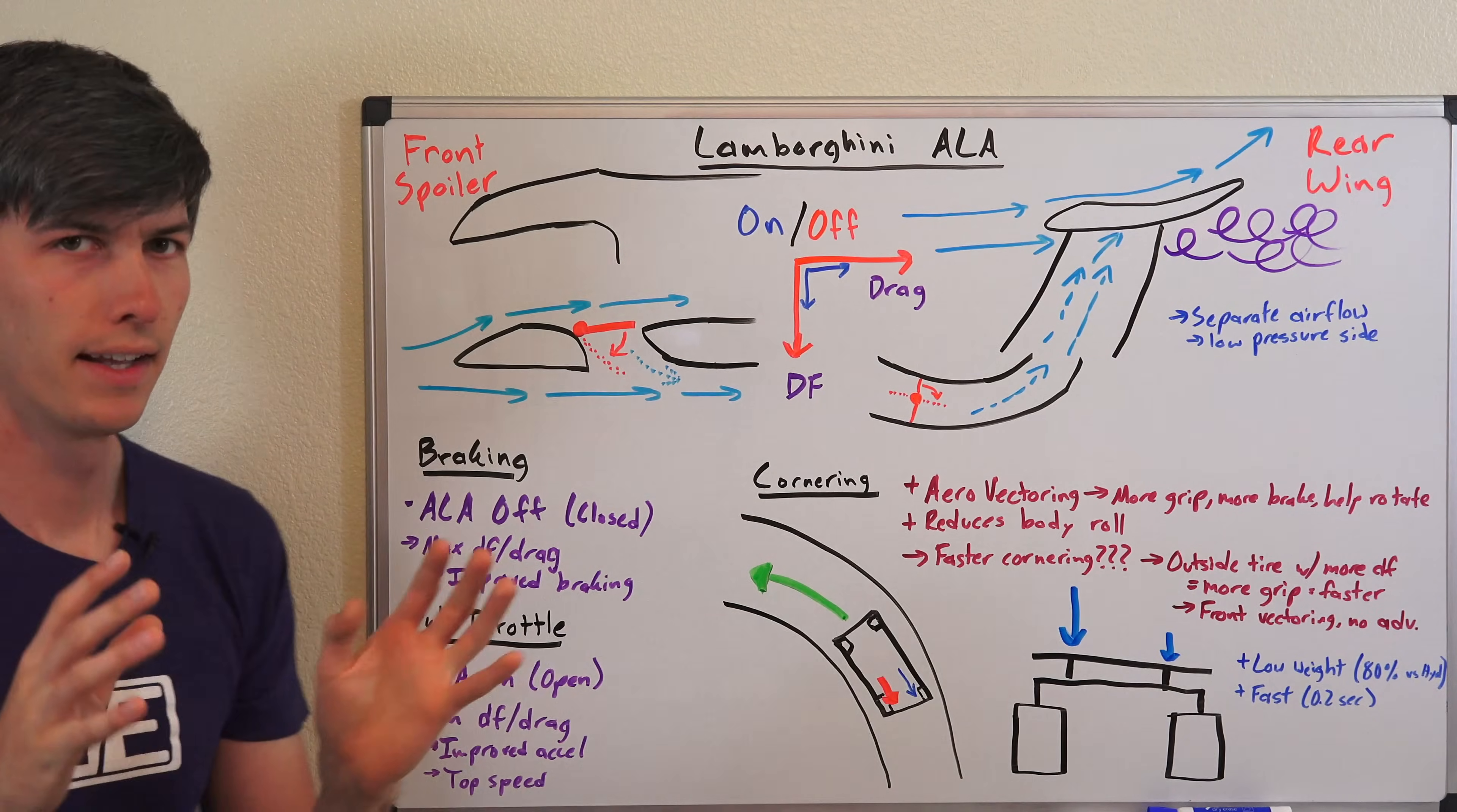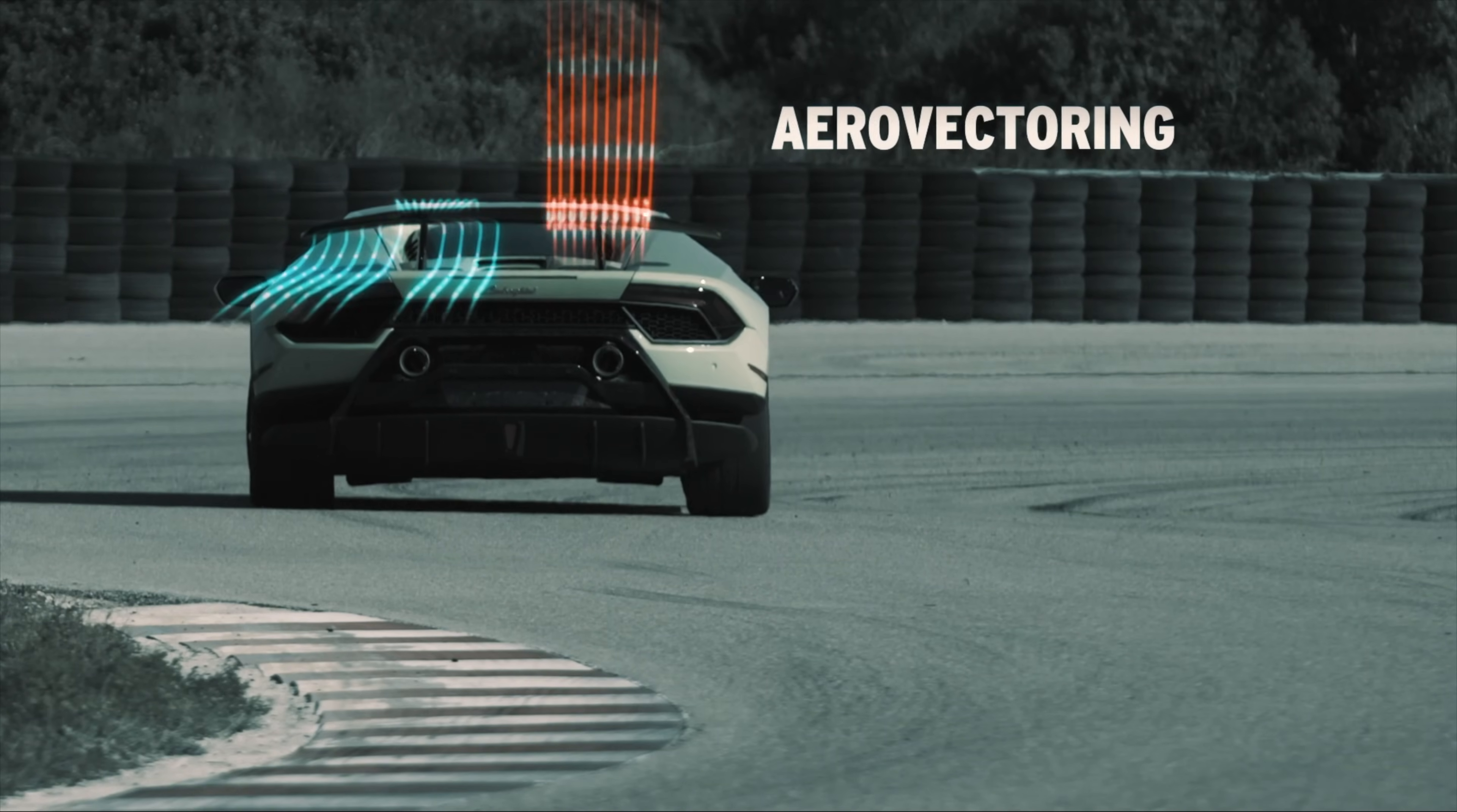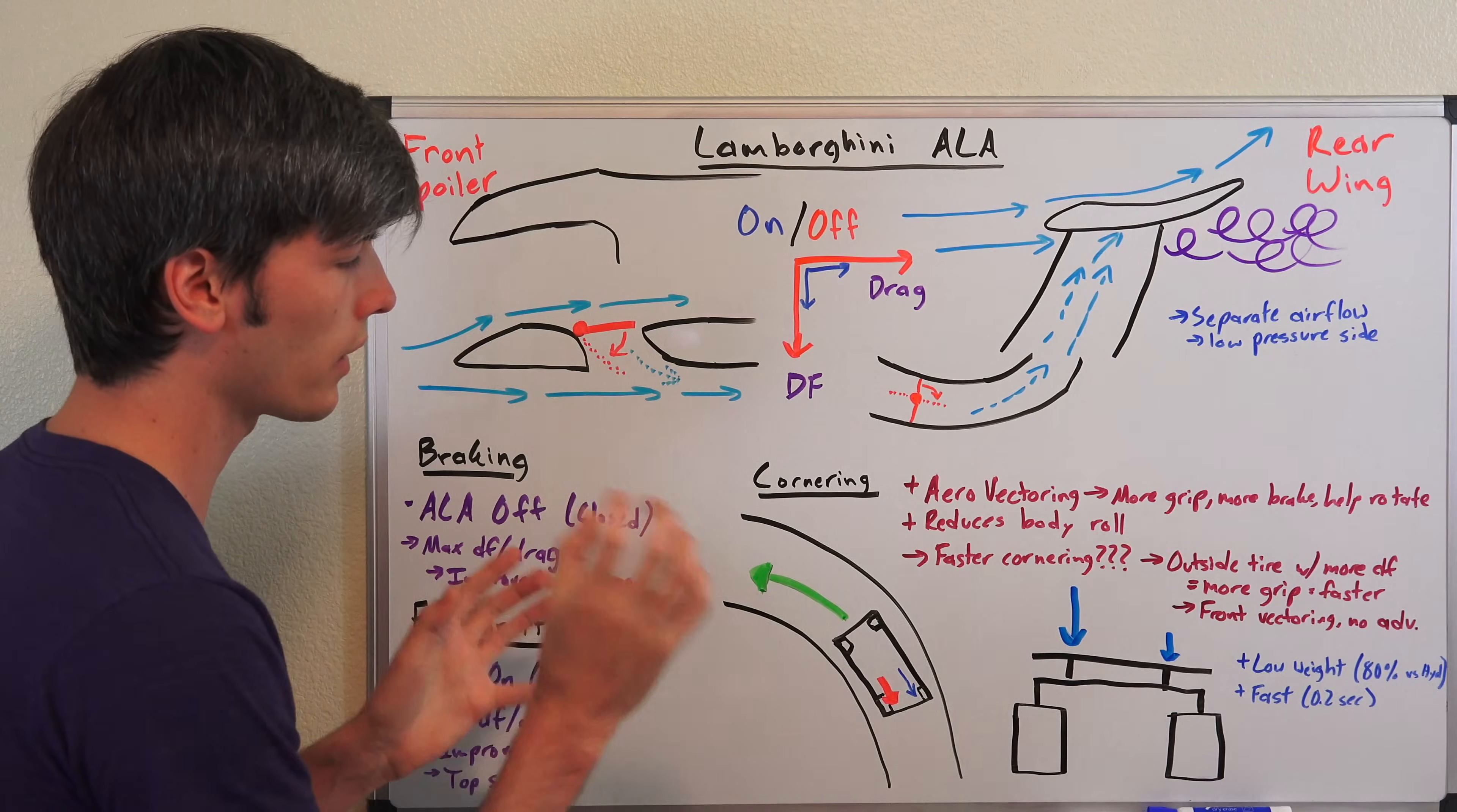Now the interesting part where it kind of gets into this marketing twist rather than necessarily a hundred percent engineering factors. This thing called aero vectoring. Lamborghini says that this will provide improved cornering speeds and reduce the amount that you need to turn the steering wheel. This probably can be true.